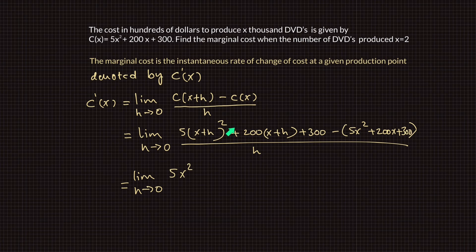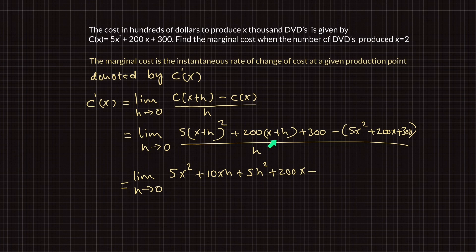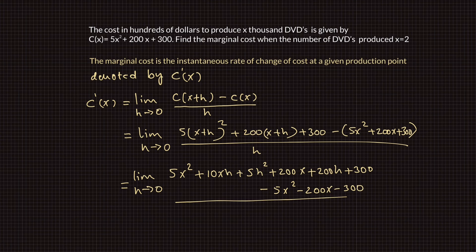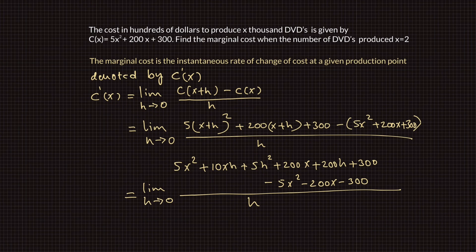Expanding x plus h squared and multiplying by 5, we obtain 5x squared plus 10xh plus 5h squared plus 200 times x plus 200 times h plus 300, minus 5x squared minus 200x minus 300, divided by h. Canceling out the positive and negative terms,